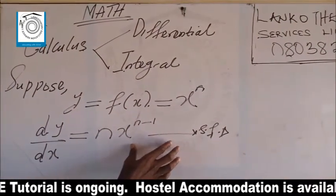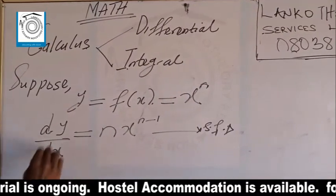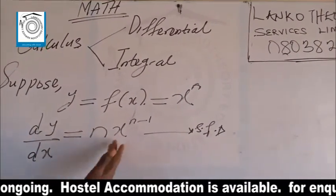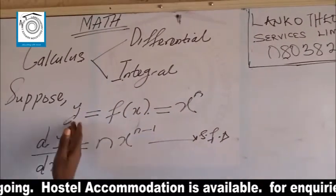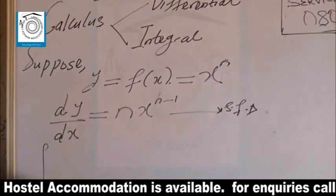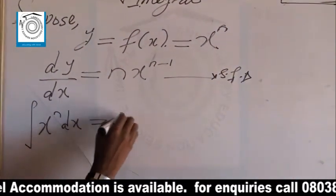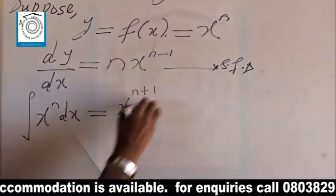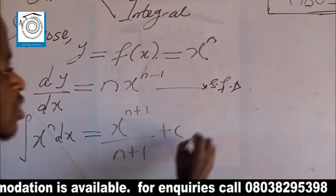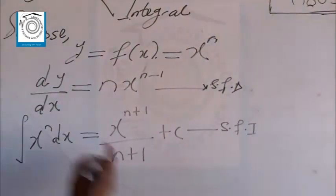So before we start to explain this in detail, you should know that the standard formula for differentiation is dY/dS, which is d of Y over d of S equal to N times S raised to power N minus 1. And if it's integration, you have the integral of S raised to power N dS will be equal to S raised to power N plus 1, upon N plus 1, plus the constant of integration.